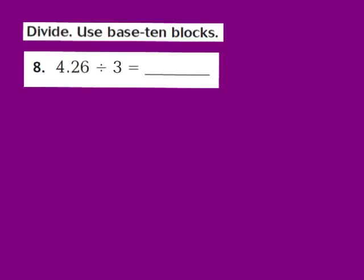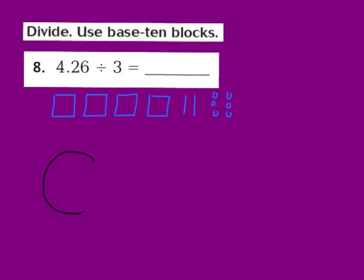Let's take a look at question number 8 together. We're going to use base ten blocks to model our division. For this problem, we have 4 and 26 hundredths being divided by 3. Step number 1: draw a quick picture to represent the dividend of 4 and 26 hundredths. I'm going to draw 4 flats: 1, 2, 3, 4. Then 2 longs to represent the 2 in the tenths place, and 6 unit pieces for the 6 in the hundredths: 1, 2, 3, 4, 5, 6. Step 2: draw 3 circles to represent the divisor of 3.